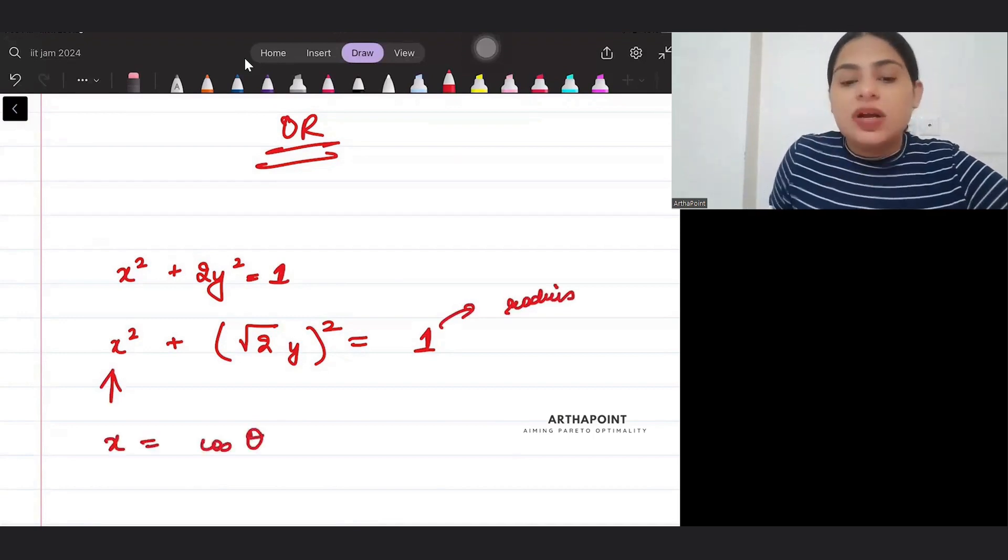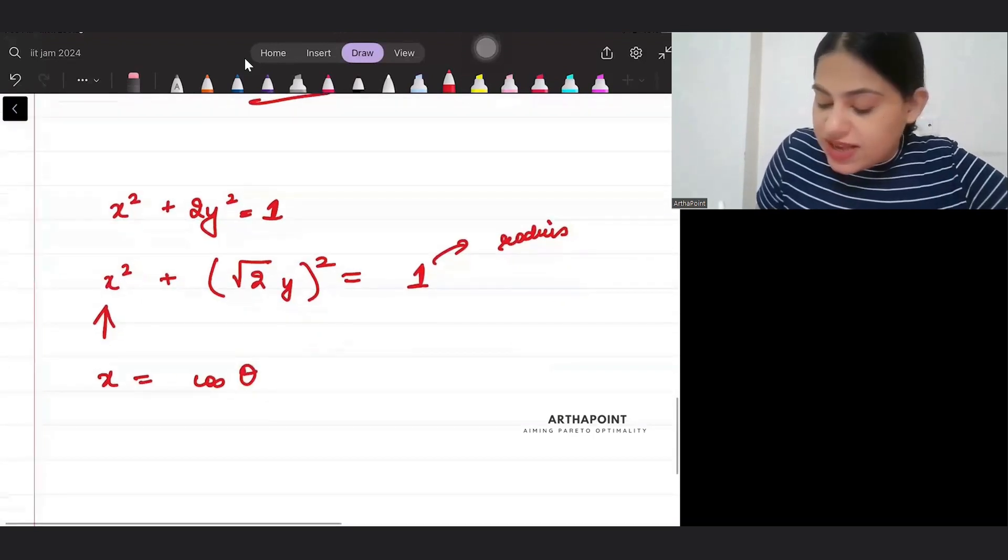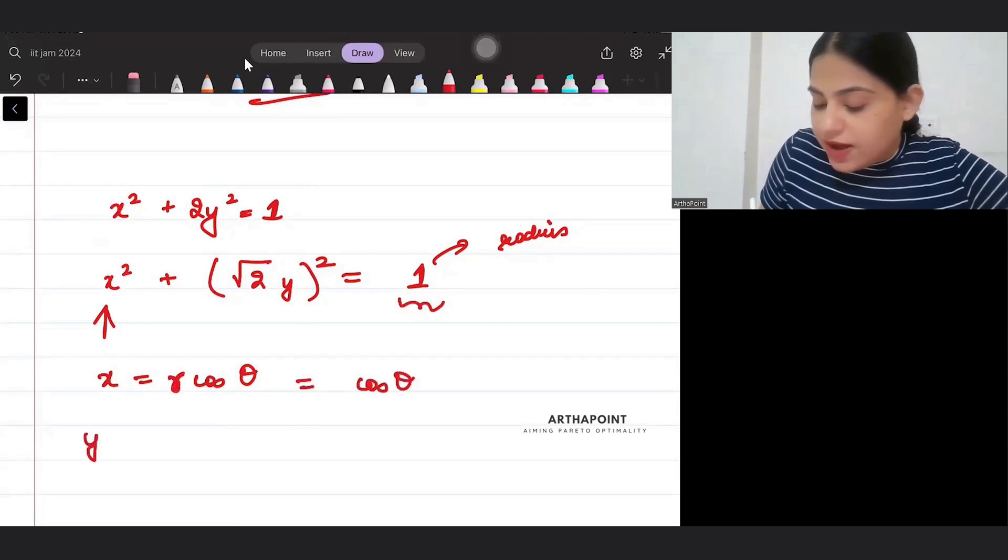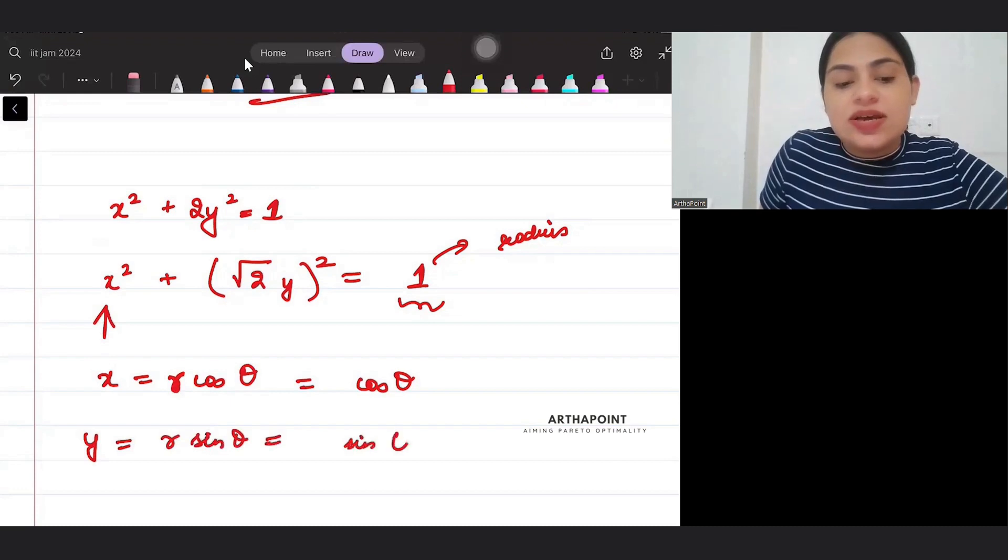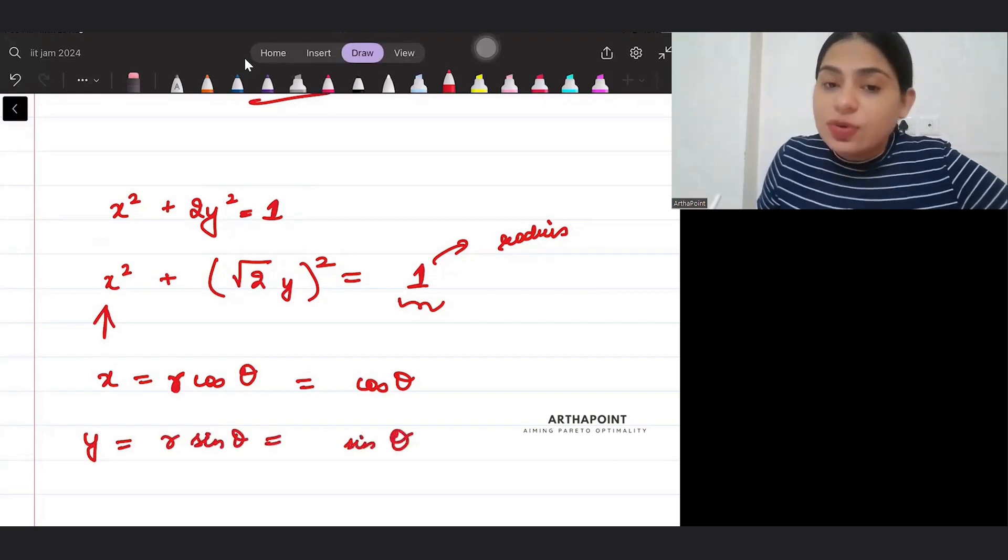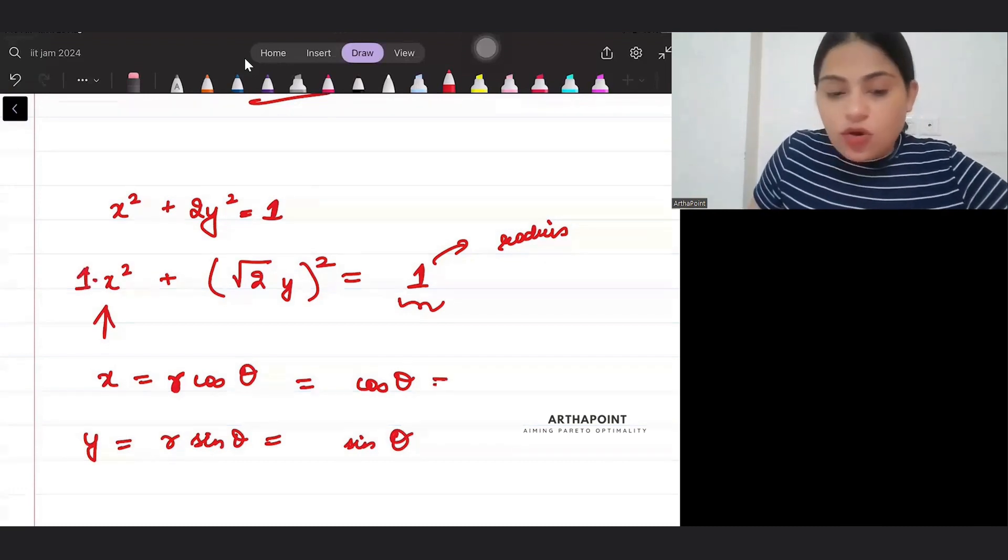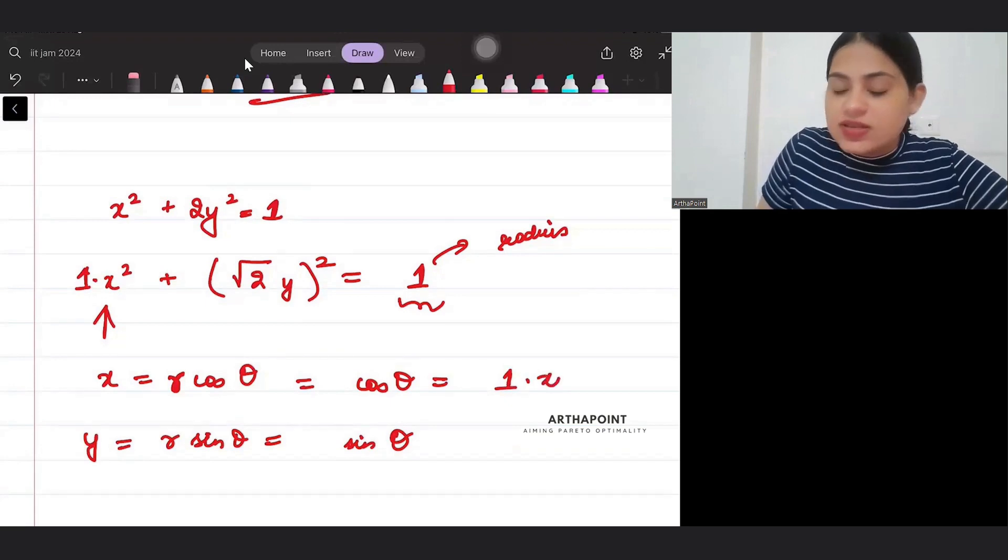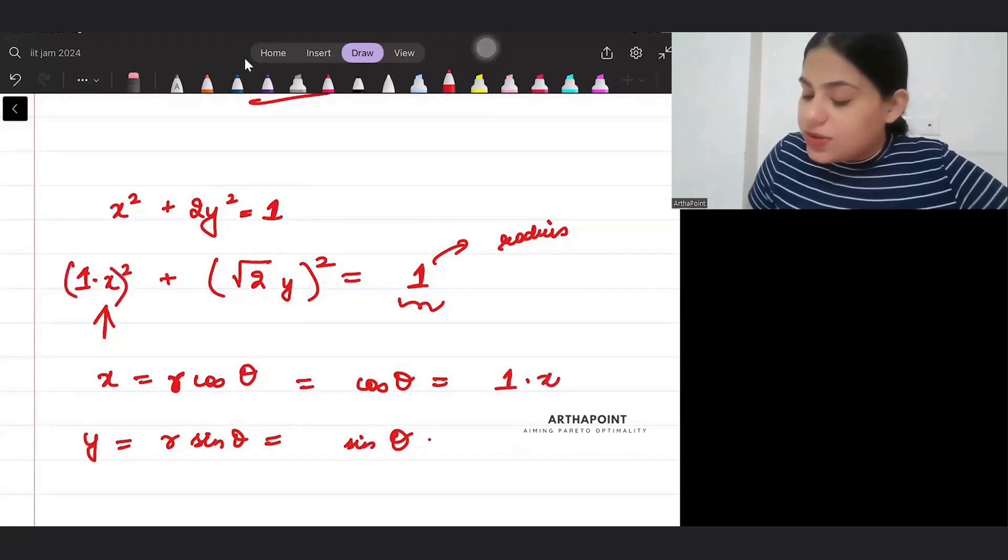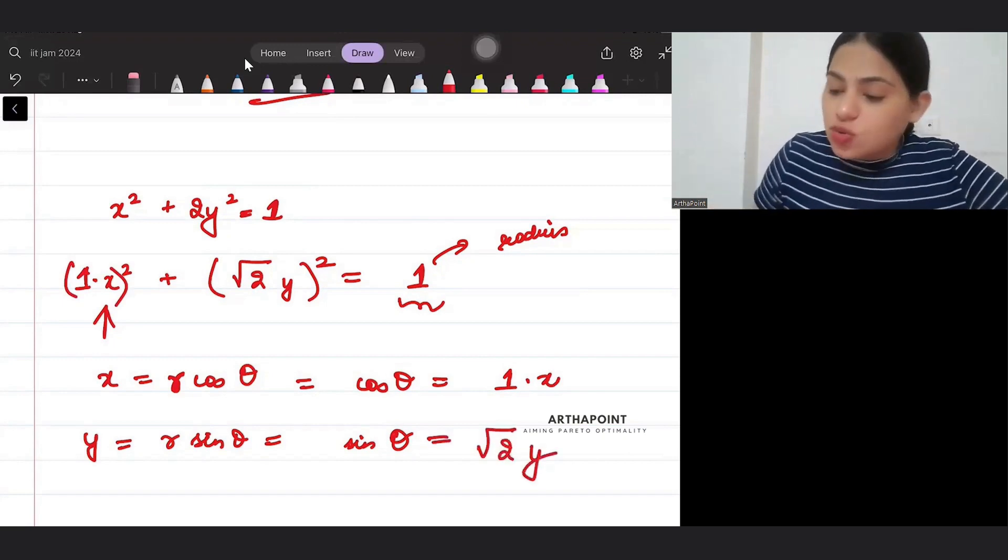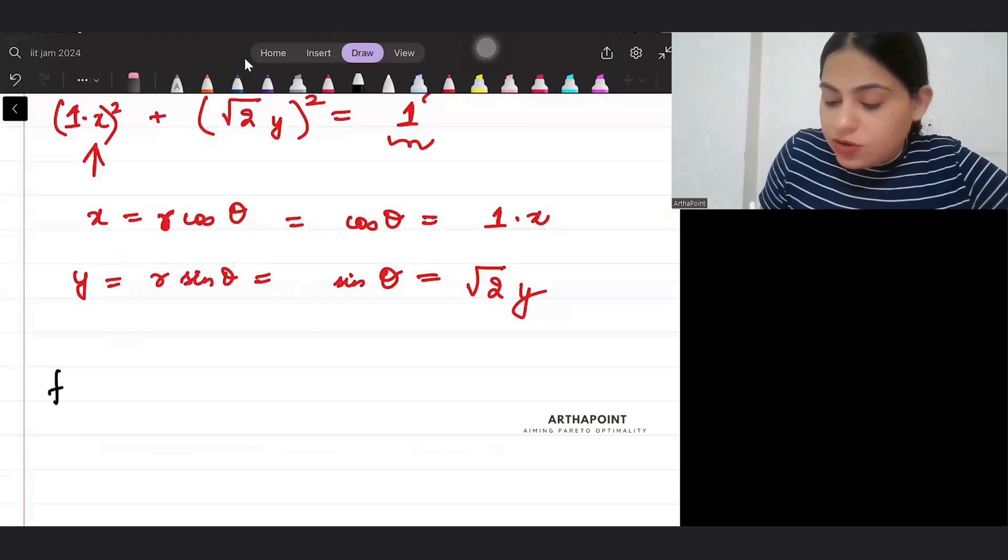So that means that x will be cos theta. Usually what is x? x is r cos theta, but radius is 1 so it will be cos theta. And y is r sin theta, radius is 1 so it will be sin theta. So I have to equate x's coefficient 1, so I will equate cos theta to 1 into x, and I will equate sin theta to root 2 y.